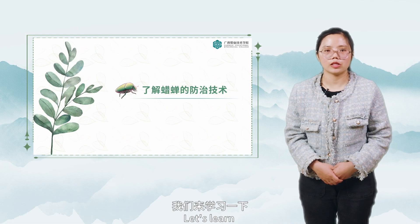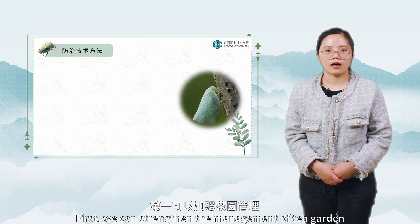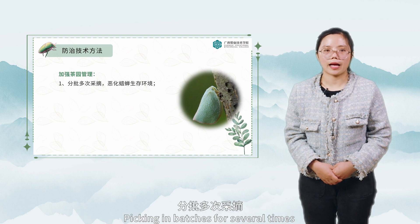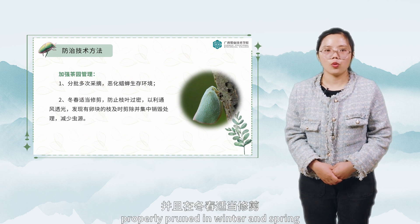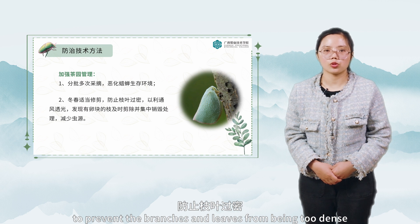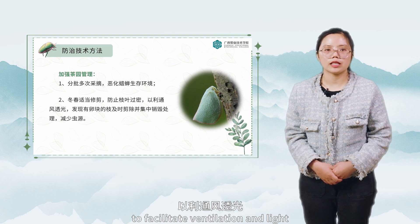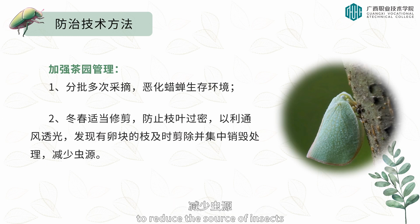Finally, let's learn the control technology of waxicada in tea garden. We can strengthen the management of tea garden by picking in batches for several times to worsen the living environment of waxicada. Properly prune in winter and spring to prevent the branches and leaves from being too dense, to facilitate ventilation and light. Cut off the branches with egg blocks in time and centrally destroy them to reduce the source of insects.